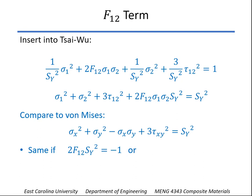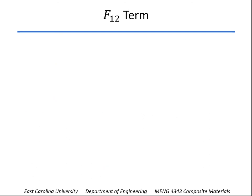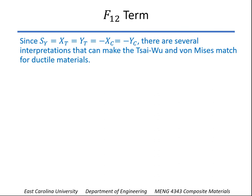So again, if 2 times F1-2 times the yield strength squared is equal to minus one, then those criteria are the same. So F1-2, in this way of looking at it, would be minus 1 over 2 times the yield strength squared. Now, remember, though, for the ductile material, we said that the yield strength could be the tensile strength in the x-direction, the tensile strength in the y, or negative values x of c and y of c. So a lot of interpretations that can make that F1-2 value be the same so that the Tsai-Wu and von Mises match each other.